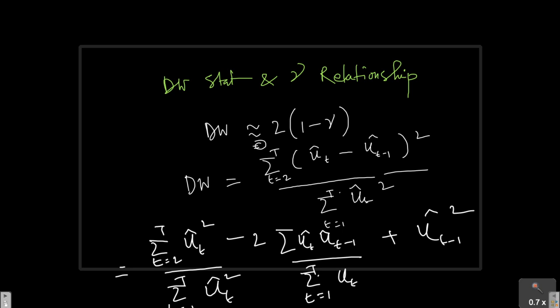I can actually write down t equals 1 to t ut hat square, here also I can write t equals 1 to t ut hat square. Oh sorry, I forgot to give this summation sign here and in all these cases of course in the numerator t equals 2 to t, t equals 2 to t, and in the denominator I am going to have t equals 1 to t ut hat square.